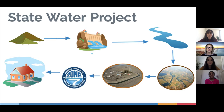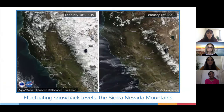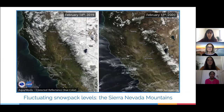Today, two-thirds of the state depends on the State Water Project, including Pleasanton. Changing climate impacts the amount of surface water we get from the snowpack of the Sierra Mountains, a major source of water that Zone 7 obtains from the State Water Project. Based with fluctuations of the snowmelt, we must adapt. By utilizing water conservation strategies, we can remedy the lack of supply during seasons with less snowpack. We can't predict the future, so we need to depend on our ability to adapt to highly variable climate changes.